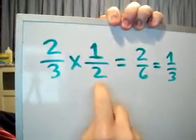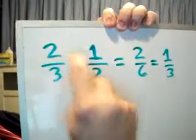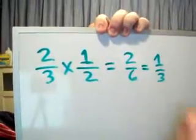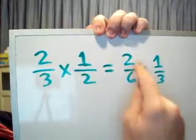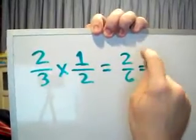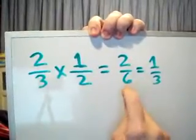We multiplied it by the 1 to 2 ratio and what we did: 2 times 1 is 2, 3 times 2 is 6. And if you reduce the 2 and the 6 by 2, 2 divided by 2 is 1, 6 divided by 2 is 3.